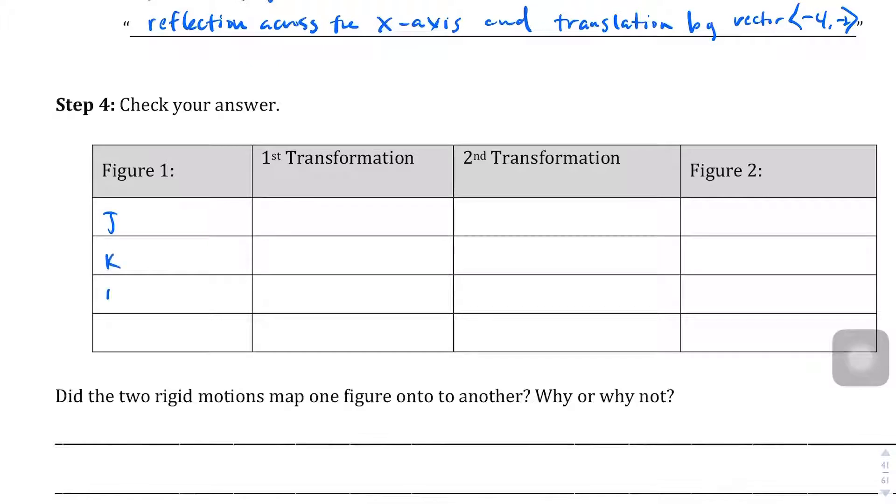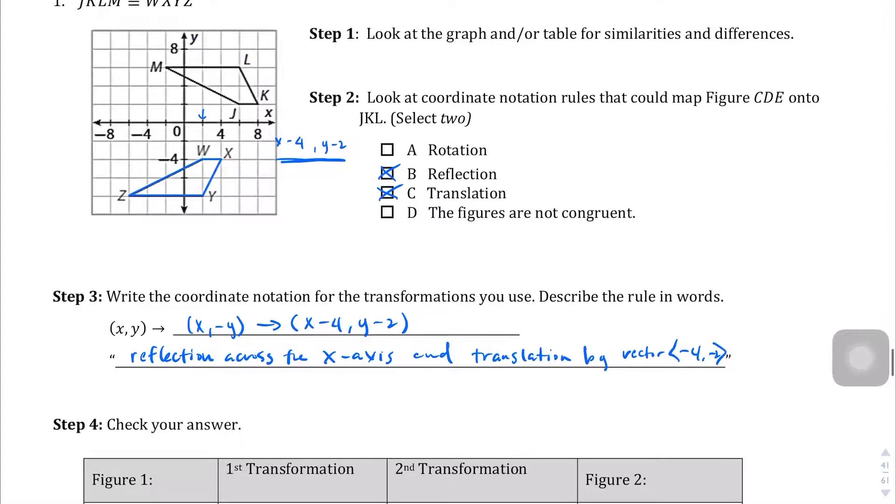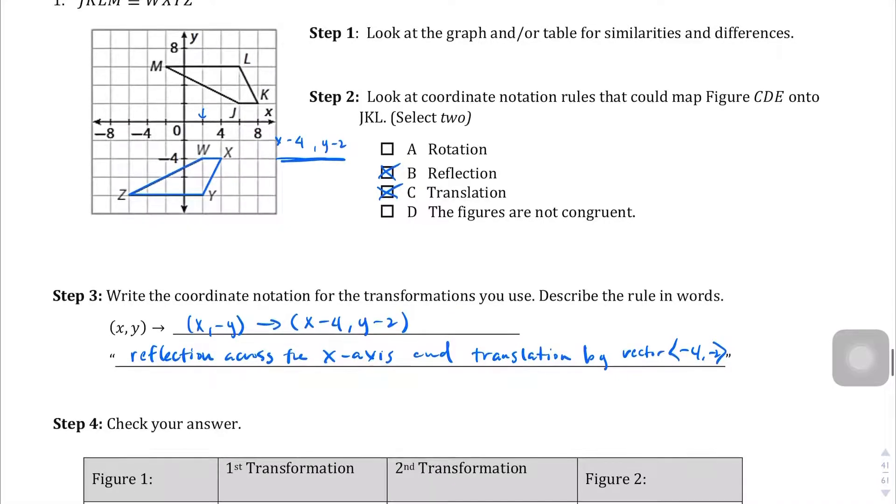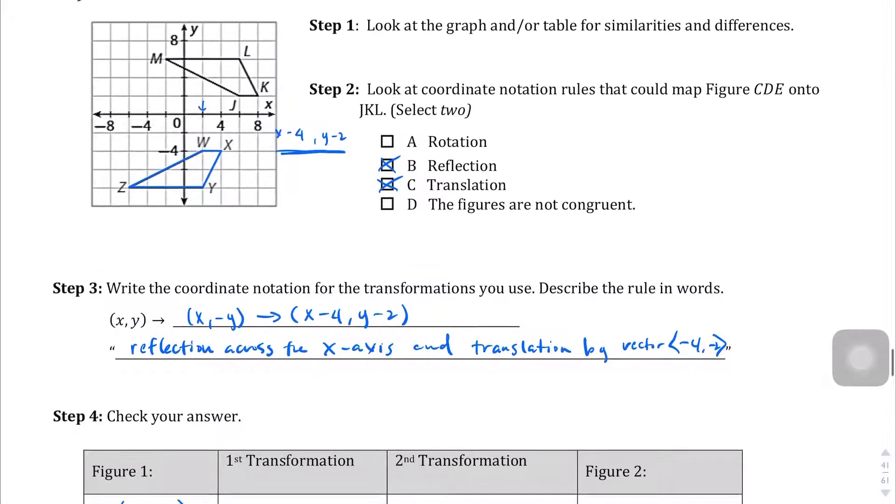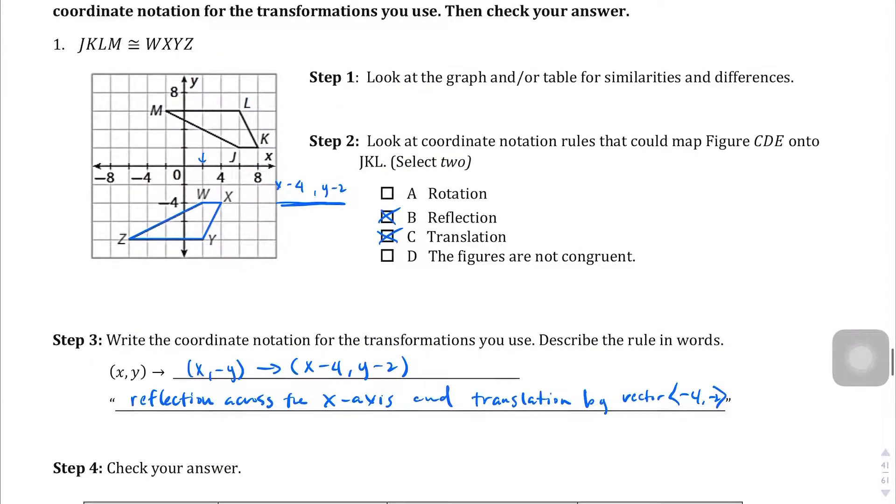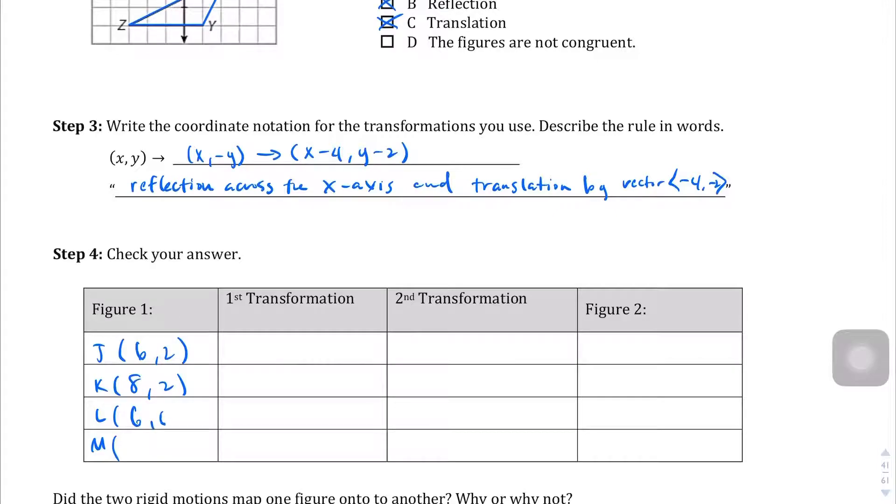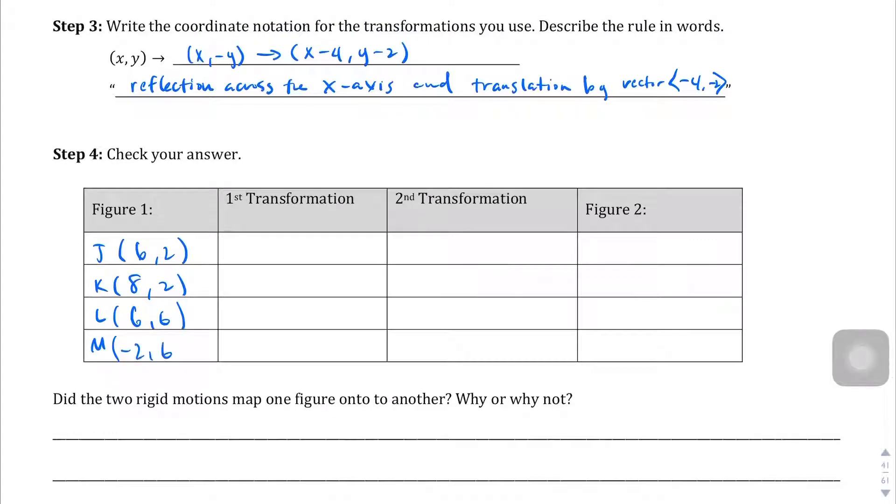J, K, L, M. This is where all you spatial reasoning folks might get some help here keeping track of all this information. And this is a little bit tricky because remember each line is two units. So, J, it looks like it's at (6,2). K is at (8,2). L is at (6,6). And M is at (-2,6). But they added the row part.